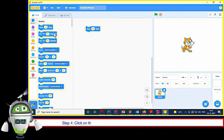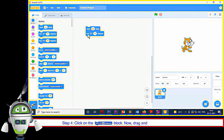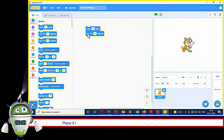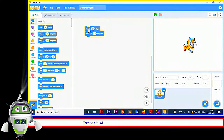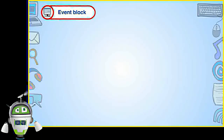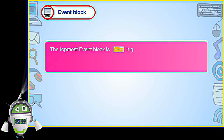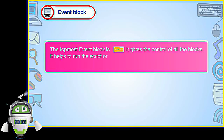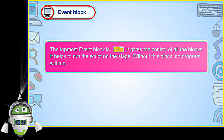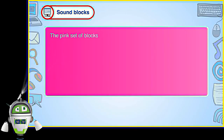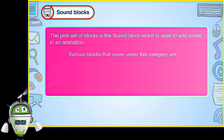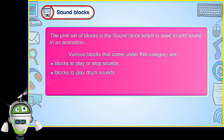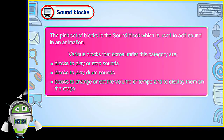Step 4 — Click on the Turn 15 Degrees block, drag and drop it on the Scripts area below the Move 20 Steps block. The sprite will move and rotate according to the blocks. The topmost Event block gives control of all the blocks and helps to run the script on the stage — without this block, no program will run. The pink Sound blocks are used to add sound in an animation, including blocks to play or stop sounds, play drum sounds, and change or set the volume or tempo.